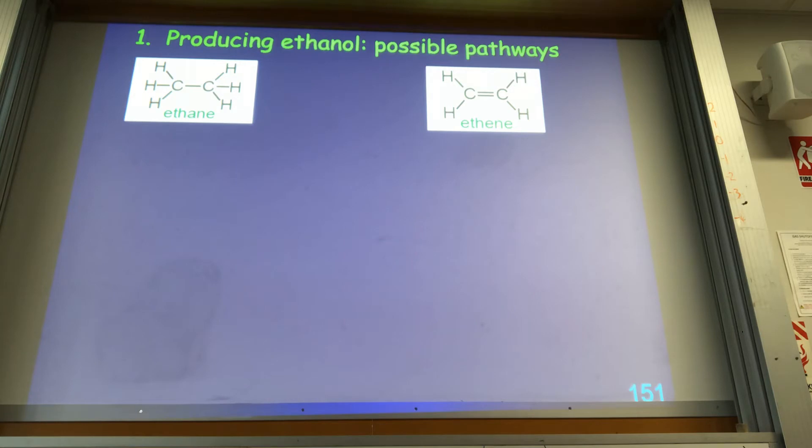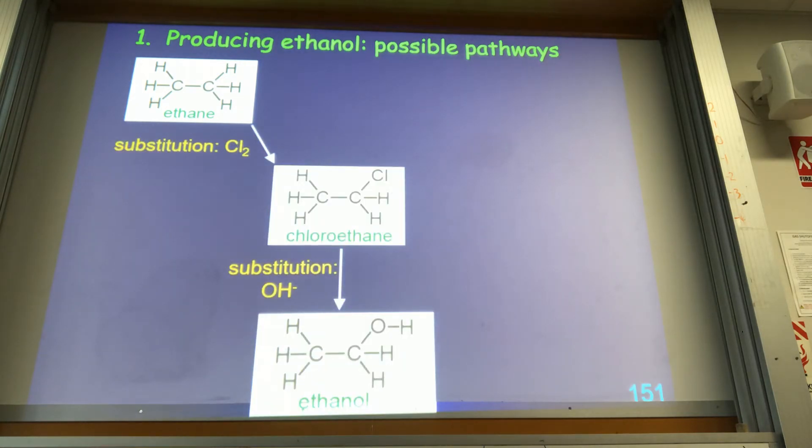So how are we going to get our ethanol? Well, if we start from ethane, this is the pathway we're going to follow. First of all, we have to do a substitution reaction. We have got no choice but to subject this to a pretty brutal attack with some chlorine and some UV light or some heat. We'll get chloroethane out of it, and then we can substitute that with hydroxyl group to get ethanol.